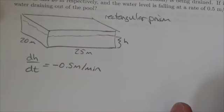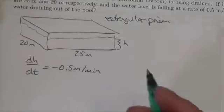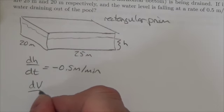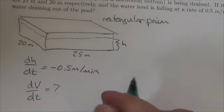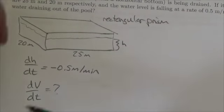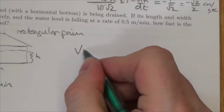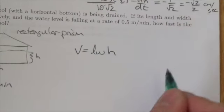How fast is the water draining out of the pool? Now what that's asking for is dv by dt. How fast is the water leaving? So what I got to do is I got to come up with a relationship between volume and height. Now volume of the water in there is going to be length width height.